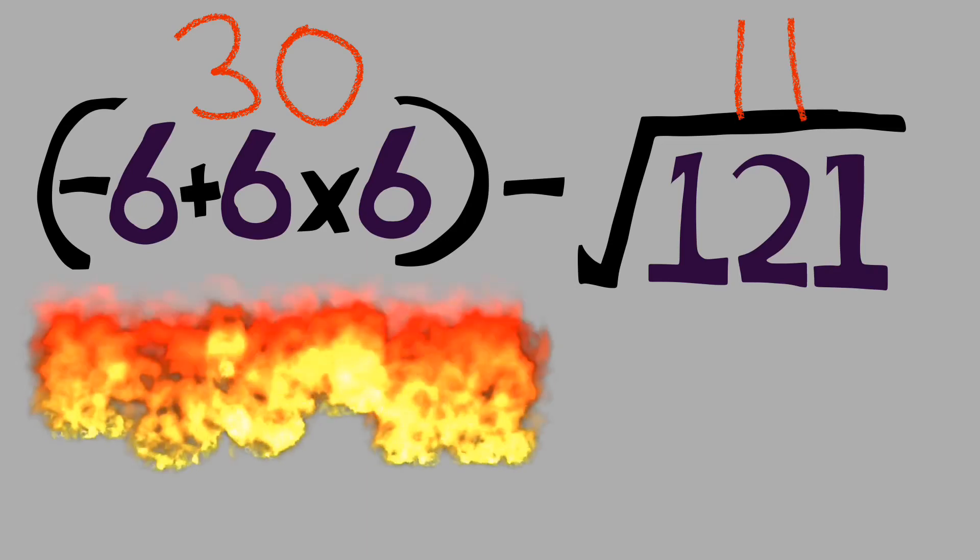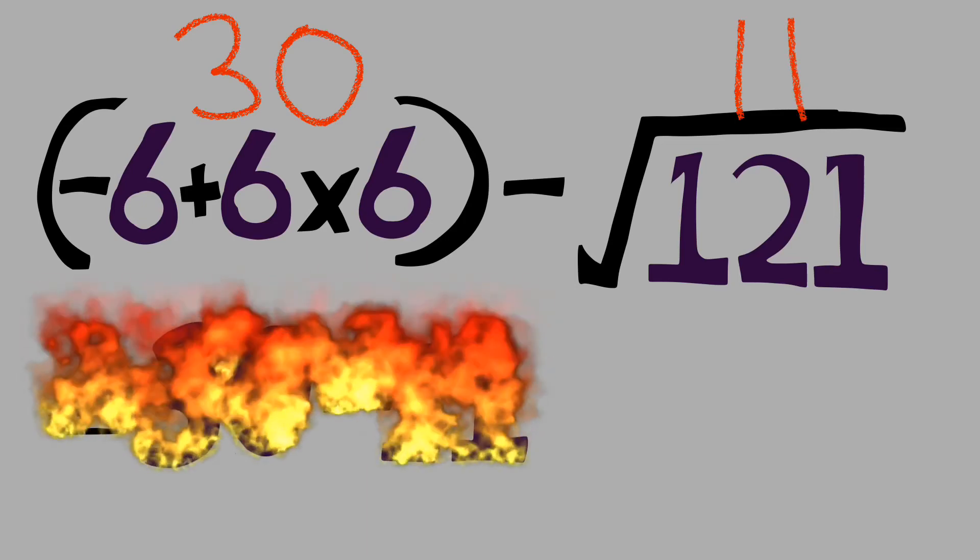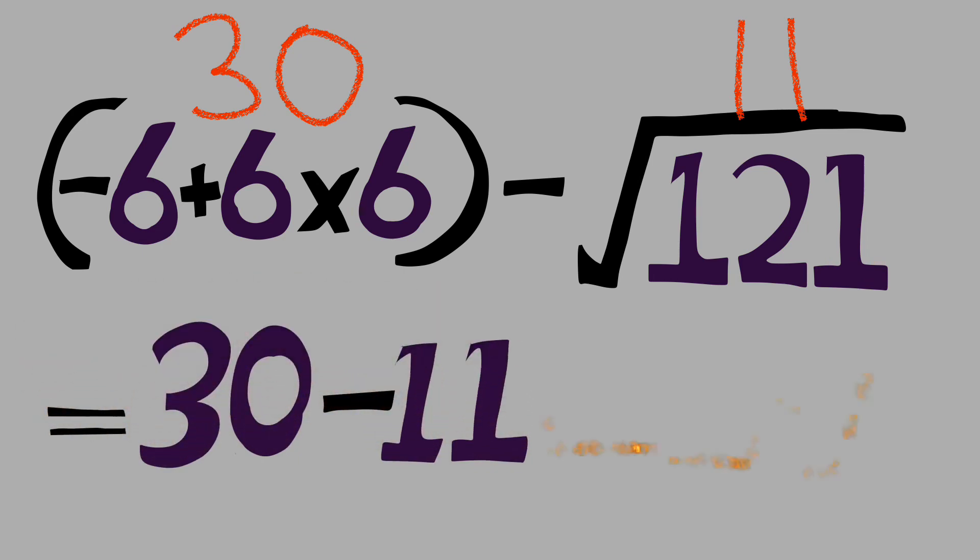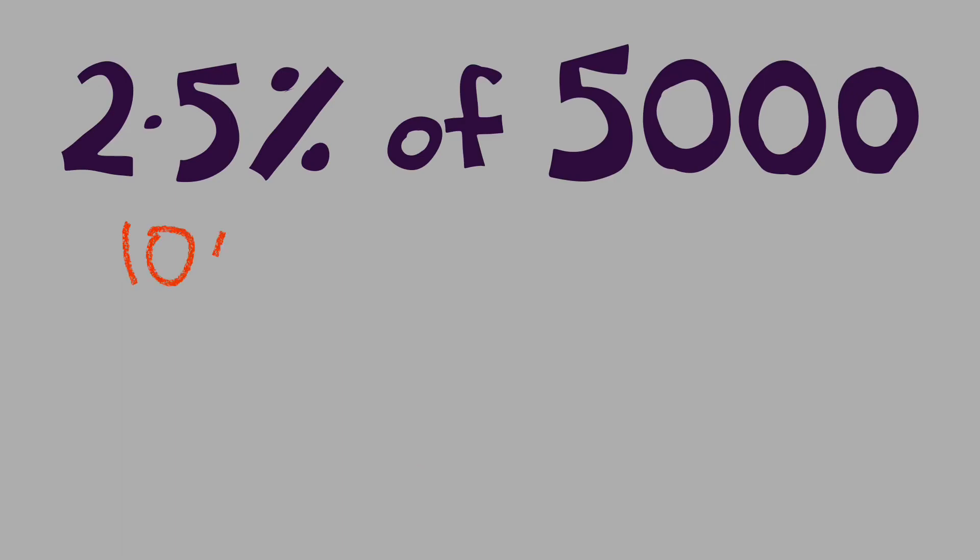2.5 percent of 5000. Well, 10 percent of 5000 is 500. Well that means 5 percent of 5000 is 250, halved again: 2.5 percent is 125.